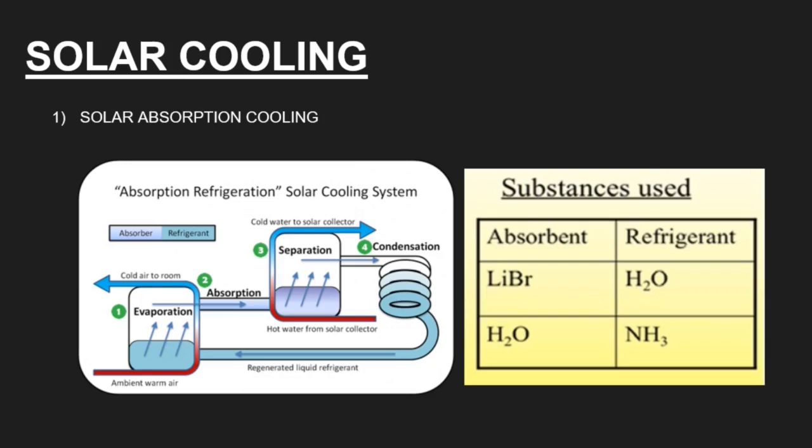The refrigerant gets evaporated due to the ambient warm air which is coming, thus the warm air gets cooled and goes out to the room. This evaporated air is absorbed by an absorbent liquid which is then fed into another system or storage tank. In that storage tank, warm water from the solar collector comes.